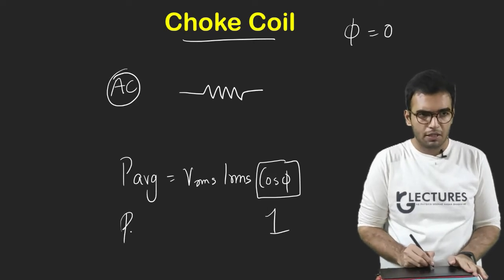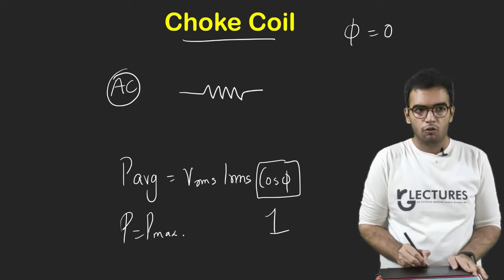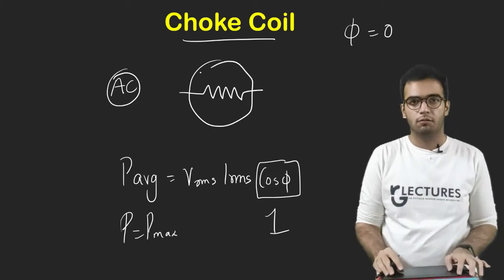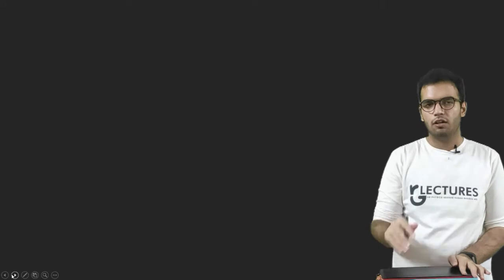Which indicates the power consumed by a resistor is maximum. Because whenever cos is 1, P becomes Pmax. So basically my resistor will consume much of the power. In my circuit my resistor will consume much of the power. So I do not want this to happen.